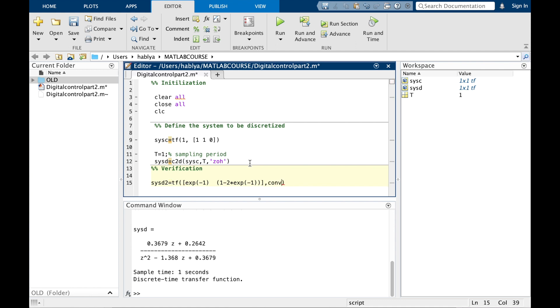Here I'm using convolution to make the product of two polynomials, and I will put the sampling period T. And as you see, we get the same result.